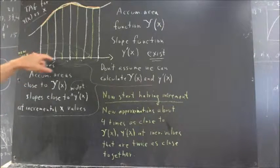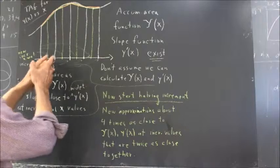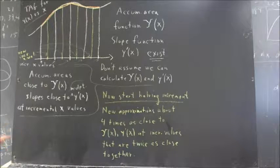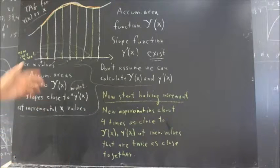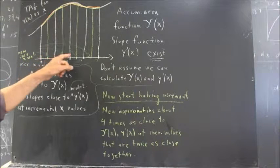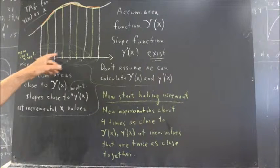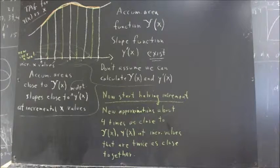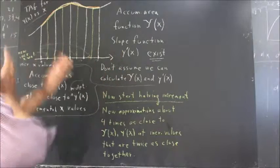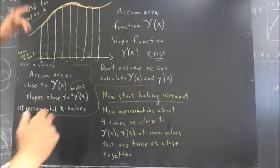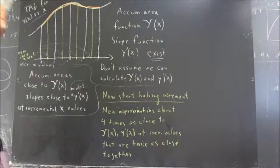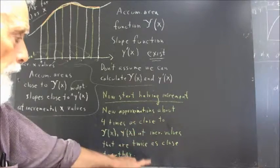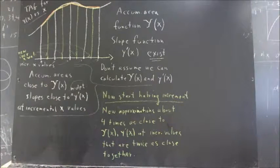Because we've got new incremental values and still have the old ones, we now have incremental x values that are twice as close together. If we do this again, the same thing happens: we get incremental values twice as close together and midpoint values that divide each increment in half. Our new approximations again get four times as close. So now our incremental values are four times as close together as they were at the beginning, but our approximations are four times four — 16 times as close — and we've got four times as many incremental values.